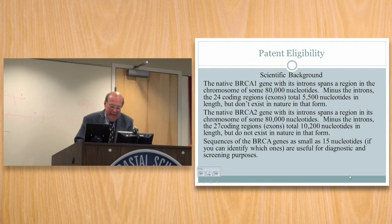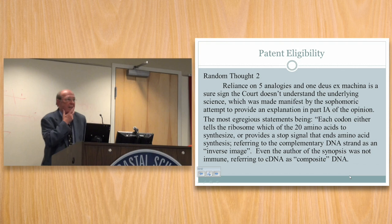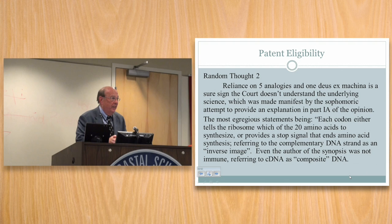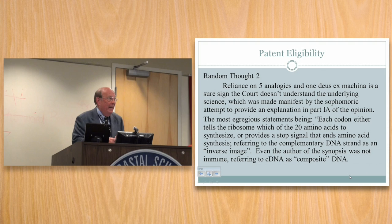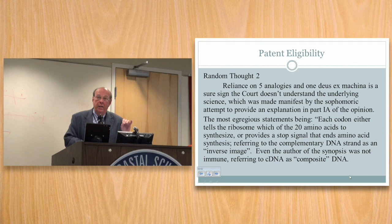It's clear from reading the cases — at the district court, the Federal Circuit, and at the Supreme Court itself — that the justices did not understand the science. The way you know that's true is that the parties had to rely on six analogies in order to explain to the court what was going on. Any time you try to use an analogy, something gets lost — there's no such thing as a perfect analogy.